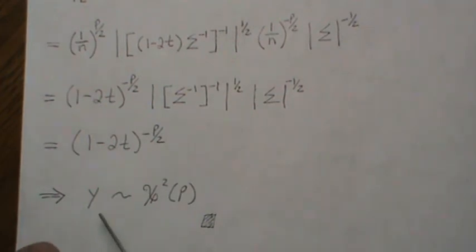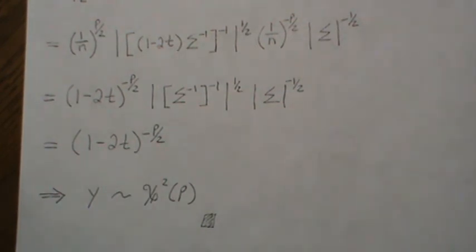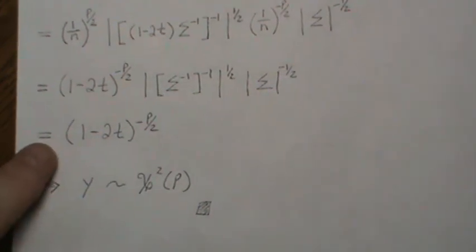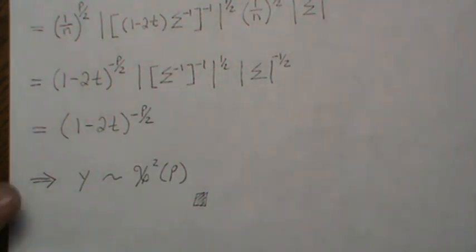That was the moment-generating function of a chi-square with p degrees of freedom. So that implies that y is distributed chi-squared with p degrees of freedom, by the uniqueness theorem of moment-generating functions. That's all for today. Hopefully you enjoyed that. Please like the video and subscribe so you don't miss the next one. Thanks, bye.